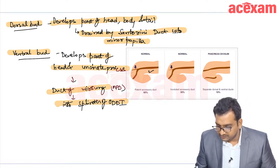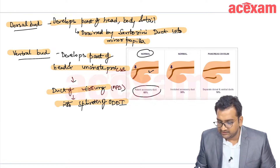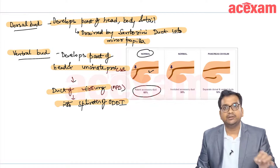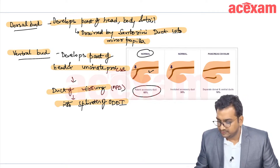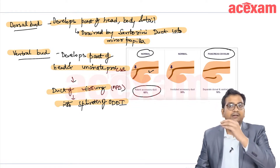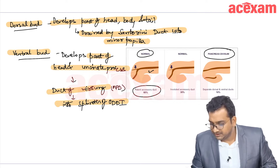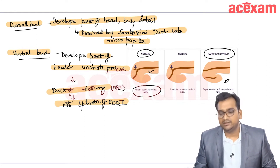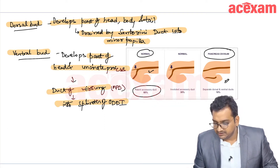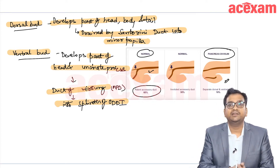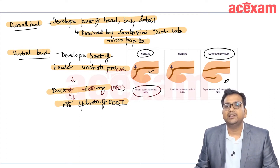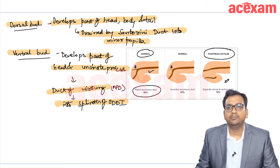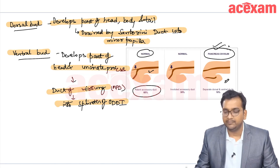Normally, there is a patent accessory duct in 60% of patients, which drains into the minor papilla alongside the major duct draining into the MPD. In 10% of patients, there is a separate dorsal duct and a separate ventral duct. In this situation, the majority of pancreatic juices drain via the minor papilla, creating a relative outflow obstruction that may lead to pancreatic-type abdominal pain or pancreatitis. This condition is called pancreas divisum and is the most common congenital anomaly of the pancreas.